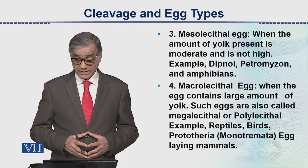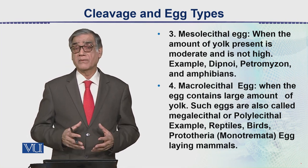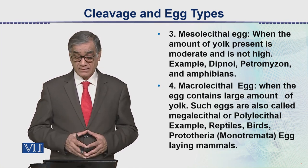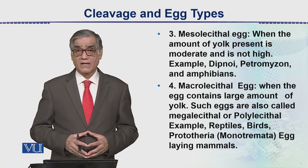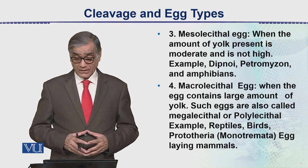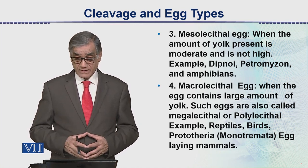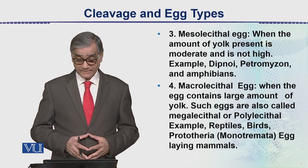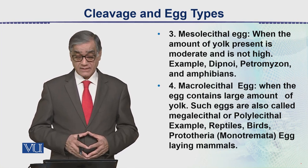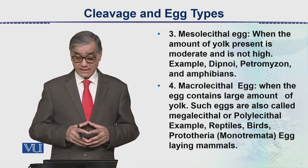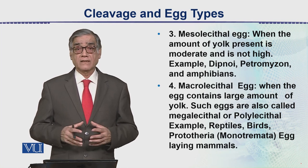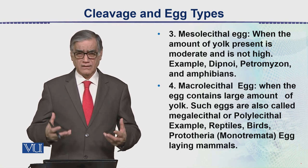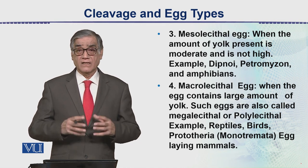The mesolecithal egg examples are Dipnoi — which we call lungfish — Petromyzon, and amphibian eggs. Then there is a fourth type, the macrolecithal egg — also called megalecithal or polylecithal — where the egg contains a large amount of yolk. Examples are reptiles, birds, and prototherian monotremes, which are egg-laying mammals. In a hen's egg, when we break it, we can see the large amount of yolk.